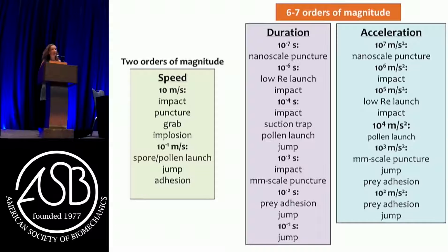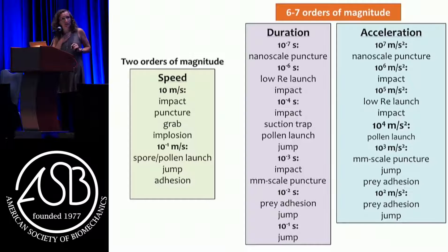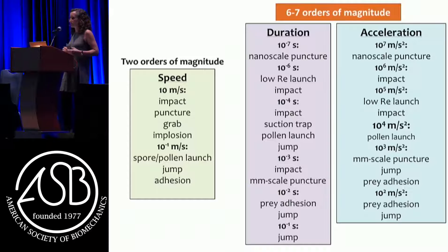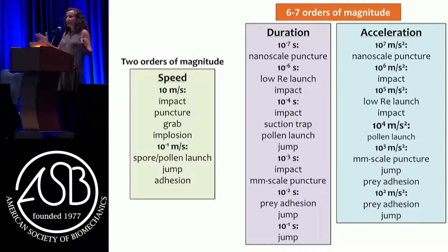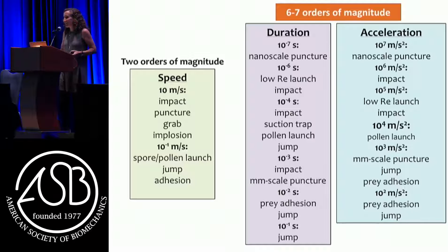We're talking incredible amounts of variation in acceleration and duration, but not speed. There's only two orders of magnitude of difference in speed here, but six to seven orders of magnitude in acceleration and duration. When we think about what is fast, it's time to put away speed and focus on acceleration and duration, where we start to see some crazy functions. Up at the top is nanoscale puncture - the stinging needle of a jellyfish puncturing at the nanoscale. As we slowly get towards the bottom we see the low end of impulsive systems, which is jumping.